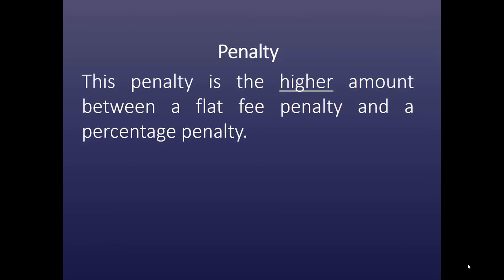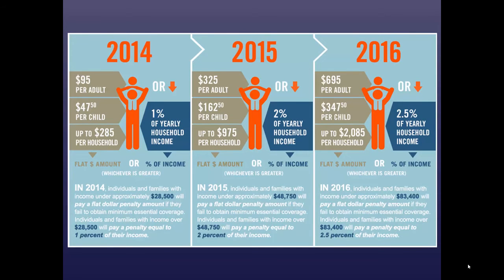This penalty is the higher amount between a flat fee and a percentage penalty. For 2014 it was $95 per adult; 2015, $325 per adult. Now for 2016, we have an increase: $695 per adult, $347.50 per child, or 2.5% of yearly household income.